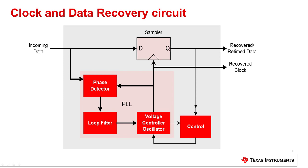The clock and data recovery block, also known as CDR, is a fundamental subsystem inside the FPD-Link deserializer. This circuit extracts the clock from the serial FPD-Link data and retimes the recovered data. A simple CDR block diagram is shown here, outlining the major components like the PLL and a sampler. How much jitter a CDR can tolerate drives the overall system jitter specification. Input reference clock jitter, transmit jitter requirement, channel effects, and CDR jitter tolerance set the specification for overall end-to-end FPD-Link system performance.